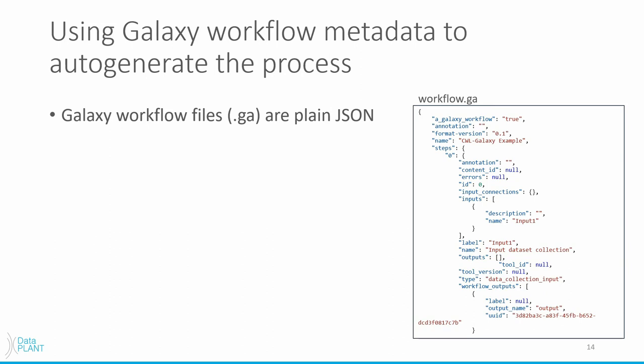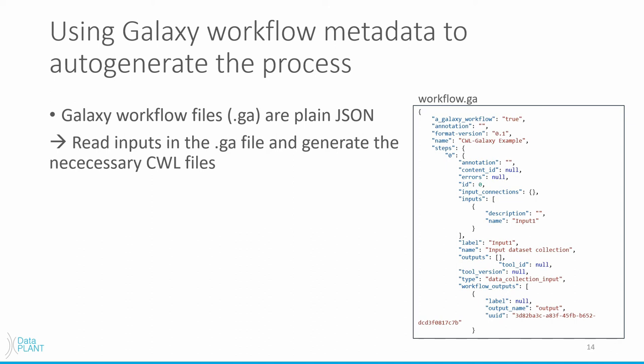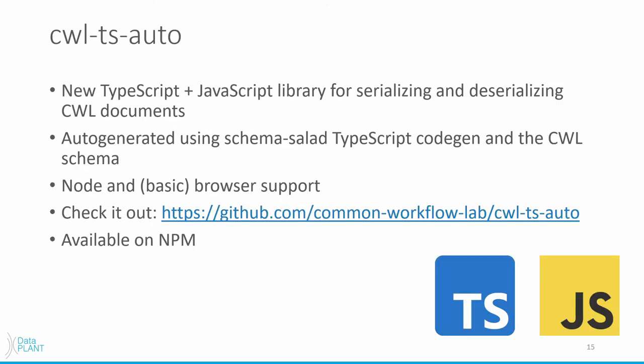So if we take a look inside the .ga file, we can see that it's plain JSON describing the workflow and its inputs. We took advantage of that and wrote a very simple tool using TypeScript, which reads the inputs of the .ga file and generates the necessary CWL files for us. The CWL generation itself is powered by CWL-TS-auto, which is a relatively new TypeScript library for working with CWL documents. It is auto-generated from the CWL schema using a TypeScript code-gen which we created for the schema-salter tool with the help of the CWL team. The library has Node and basic browser support, so you can already use it in client-side web apps. If you want to check out the project, I've put a link on this slide and it's also available on npm.